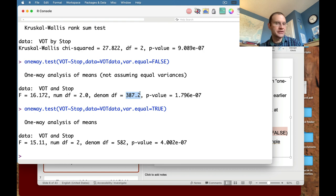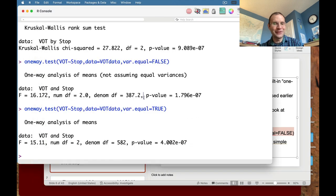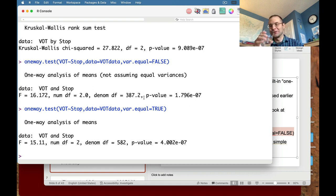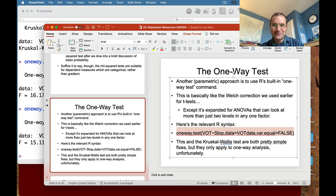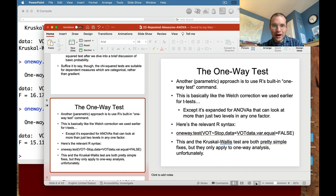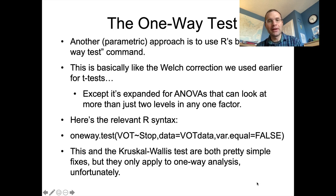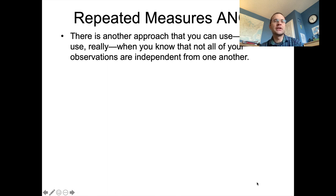Like with the Welch correction for t-tests, the degrees of freedom go from whole numbers to something with decimal points. But we're beyond worrying about that since we understand how the testing paradigm works. This and the Kruskal-Wallis test are both pretty simple fixes, but they only apply to one-way analysis. So one approach we can use when you have more than one independent factor is called repeated measures ANOVA. This is also an approach you should use when you know that not all of your observations are independent from one another.